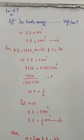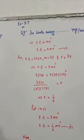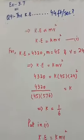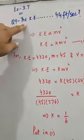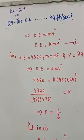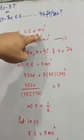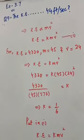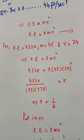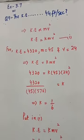Okay, question number 9. I am reading for you: the kinetic energy KE of a body varies jointly as mass m and the square of its velocity v. If the kinetic energy is 4,320 feet-pounds when the mass is 45 lb and velocity is 24 feet per second, determine the kinetic energy of a 3000 lb automobile traveling 44 feet per second.